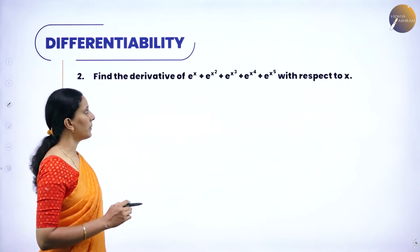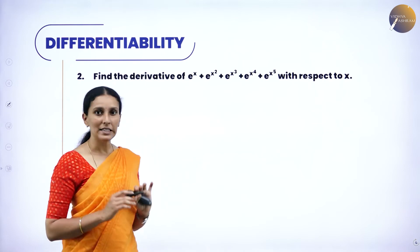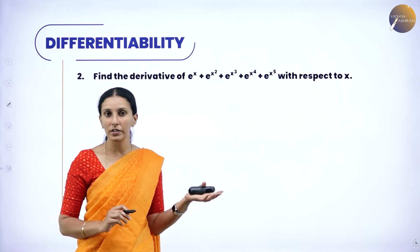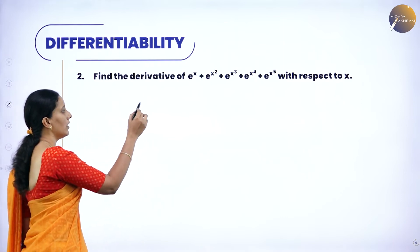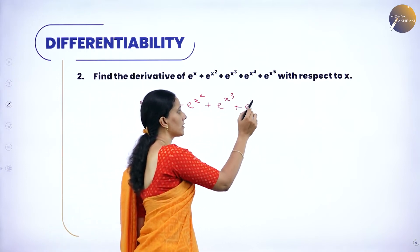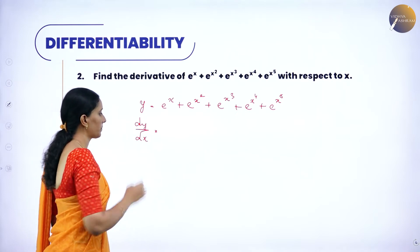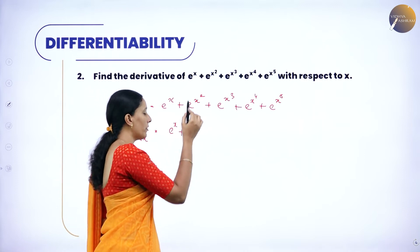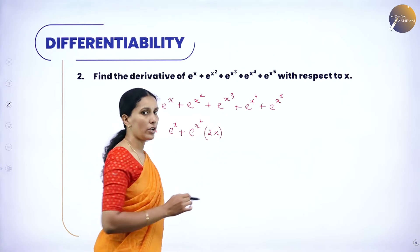Next, find the derivative of e^x + e^(x²) + e^(x³) + e^(x⁴) + e^(x⁵). We know the derivative of e^x is e^x only. But in the other four terms, x², x³, x⁴, x⁵ are polynomial functions, so we use the derivative in the form of n·x^(n−1). Let y = e^x + e^(x²) + e^(x³) + e^(x⁴) + e^(x⁵). Let us derive it directly: dy/dx. The derivative of e^x is e^x.